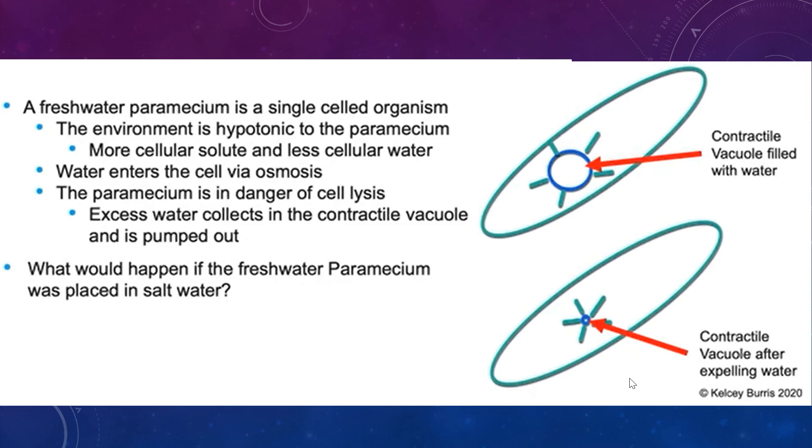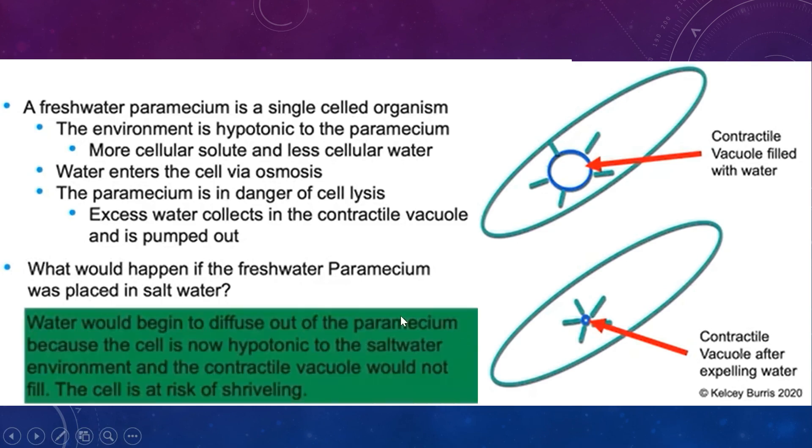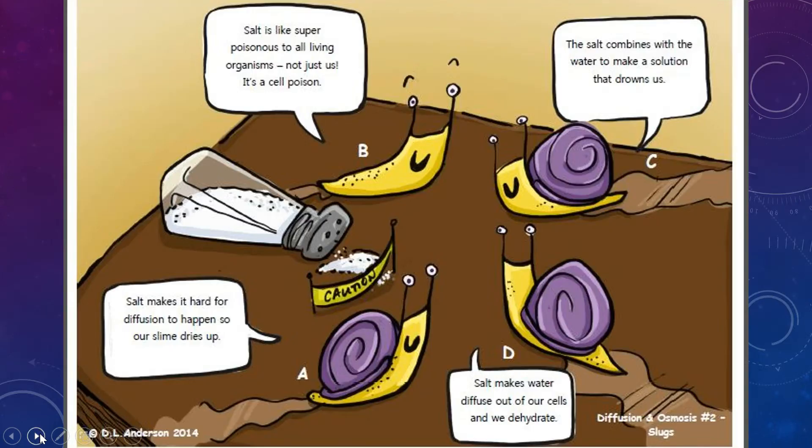So think about what would happen if a freshwater paramecium was placed in salt water. So that salt water is going to make that cell shrivel up. It would shrivel. So that contractile vacuole is a thing that can help our cells so that they are able to push out the extra water in a hypotonic solution. But if it was moved to a salt water solution, it would still have a problem.